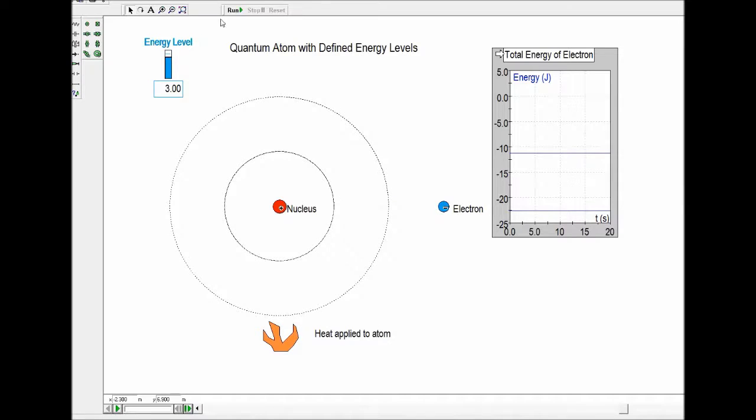My model here on the screen also has a third energy level. So in the Bohr model, these are orbits. In the more modern model, these would be considered shells.